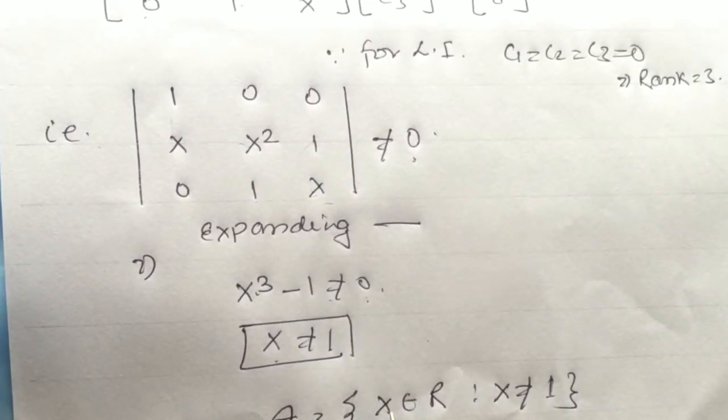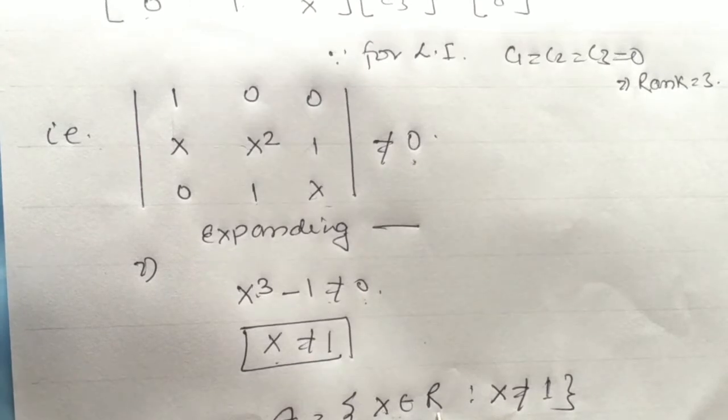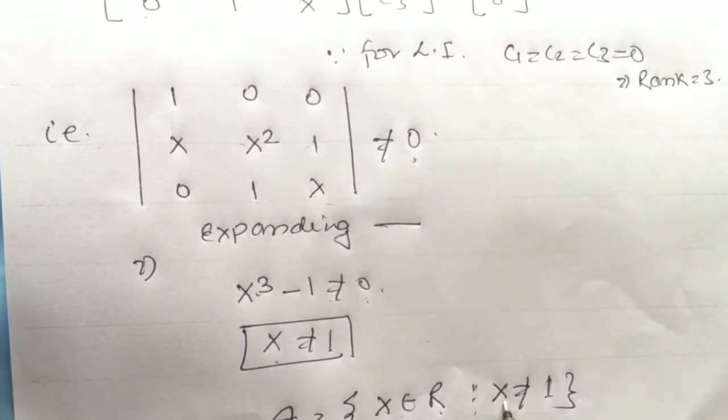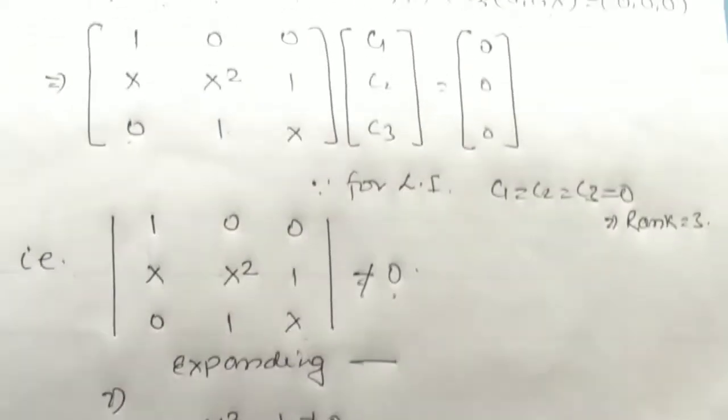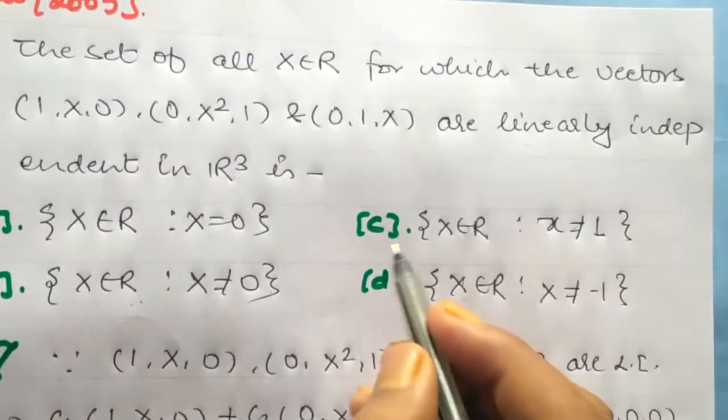So the answer is: x belongs to R such that x ≠ 1. The answer is option C.